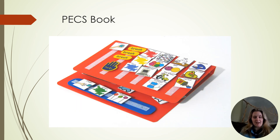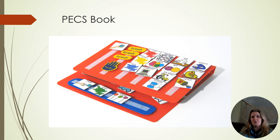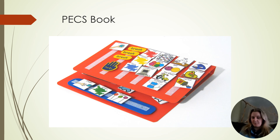This is an example of a PECS book or binder. You can see individual pictures — bubbles, cereal, a bar, balloons. This teaches children how to make requests for highly motivating items. What I find a little limiting with PECS is it's really limited to requesting, and there's so much more to language than just requesting. Also, it can be cumbersome to keep all the pictures maintained and not getting lost.